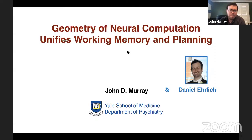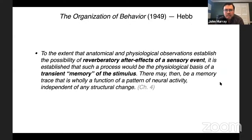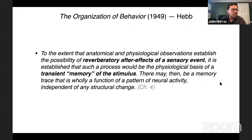Starting with a quote from Hebb's 'Organization of Behavior' in 1949: 'To the extent that anatomical and physiological observations establish the possibility of reverberatory after-effects of a sensory event, it is established that such a process would be the physiological basis of a transient memory of the stimulus. There may then be a memory trace that is wholly a function of the pattern of neural activity, independent of structural change.' This description of a transient memory of a sensory event held in a pattern of activity captures the essence of how many experimental and theoretical groups have thought about and modeled working memory in systems neuroscience.